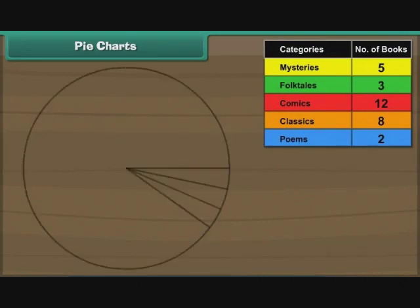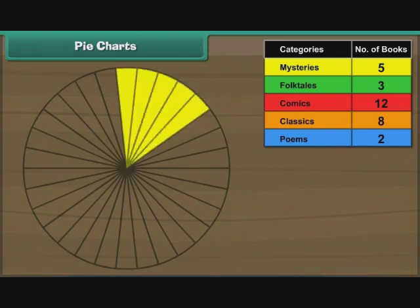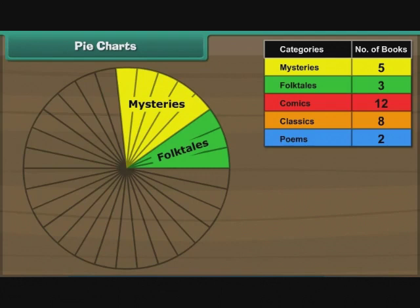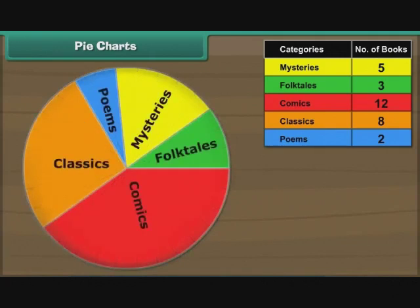Here is a circle divided into 30 sections. Each section represents a book. Let us color five adjacent sections yellow and write mysteries. Let us now color the next three adjacent sections green and write folktales. Now we count the next 12 sections, color them red and write comics. Next we count eight adjacent sections, color them orange and write classics. Finally, we color the remaining two sections blue and write poems. The pie chart is ready.